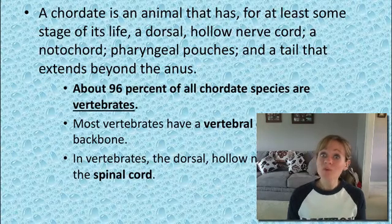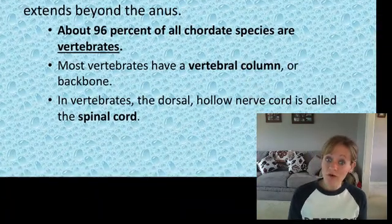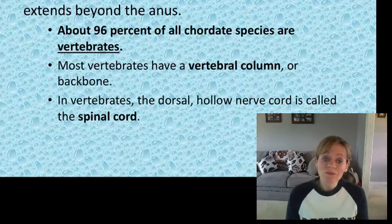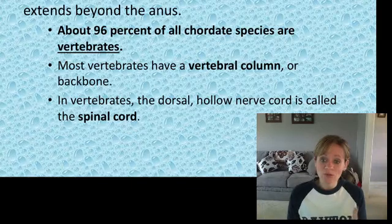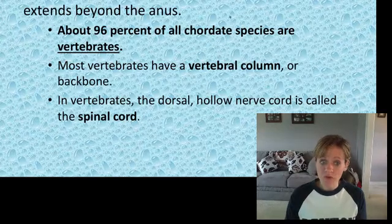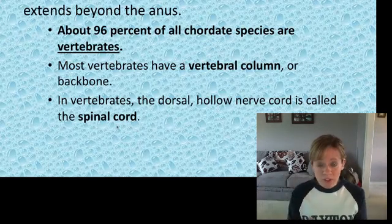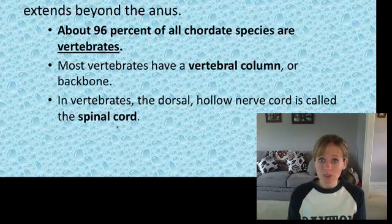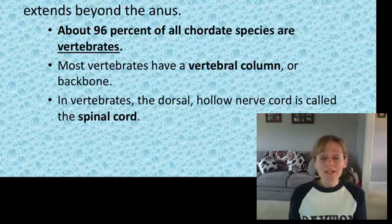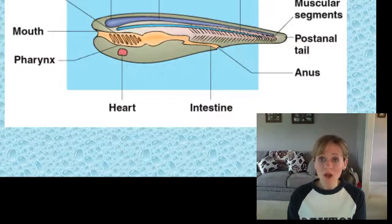About 96%, so almost all of the phylum chordata, are also vertebrates. Vertebrates are slightly different in that they have a distinct vertebral column or backbone. In vertebrates, this dorsal hollow nerve cord is called the spinal cord. We're looking at the phylum chordata and how it has evolved over time, especially in adapting to its environment — that's one thing we're going to focus on in this unit.